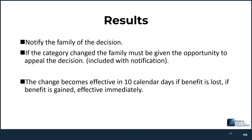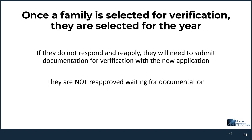Notify the family of the decision. If the category changed, the family must be given the opportunity to appeal — that's included with the notification, and they have 10 calendar days to appeal. Once a family is selected for verification, they are selected for the year. If a family was selected for verification in November and didn't respond, and in January they reapply because they're now paying Christmas bills, you cannot approve that application until they've met the verification criteria.